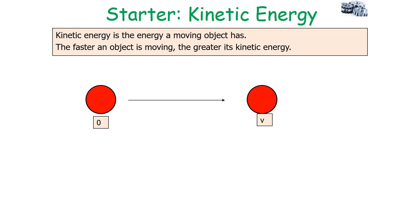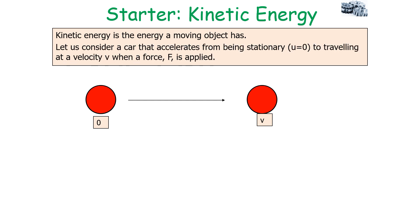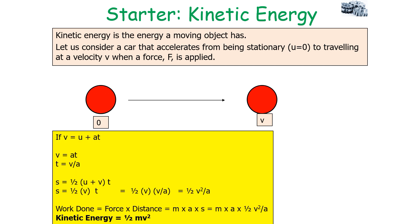Kinetic energy is the energy a moving object has — the faster an object moves, the greater its kinetic energy. Consider a car that accelerates from rest (u = 0) to velocity v when force F is applied. From the equations of motion: v = u + at, so t = v/a. Also, s = ½(u + v)t, and since u = 0, s = ½vt = ½v²/a. Since work done = F × s = MA × s, substituting s gives work done = ½mv², which is our equation for kinetic energy: Ek = ½mv².